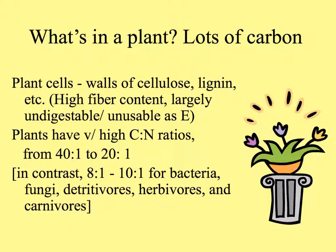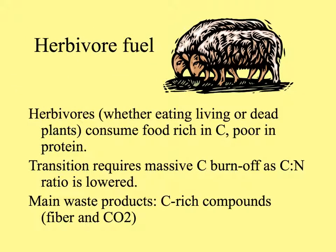In contrast, other organisms — bacteria, fungi, detritivores, plant eaters, and meat eaters — are 8:1 to 10:1 carbon-to-nitrogen. So herbivores eating plants, whether those plants are dead or alive, are eating food that's very rich in carbon and poor in protein or nitrogen. The transition to make that food into something they can make their own tissues out of requires a big burn-off of carbon, as that carbon-to-nitrogen ratio is lowered.